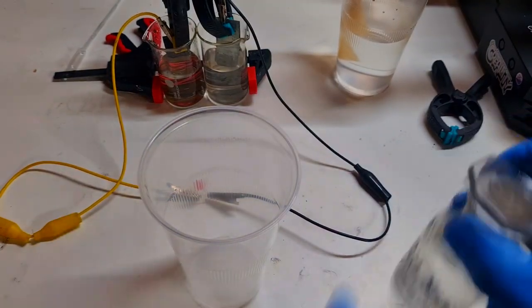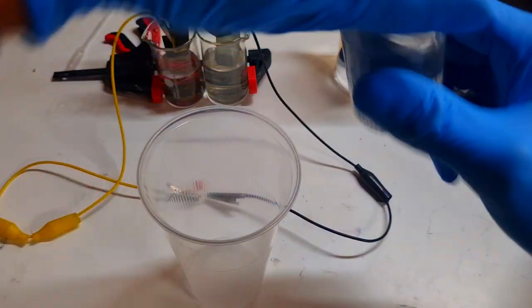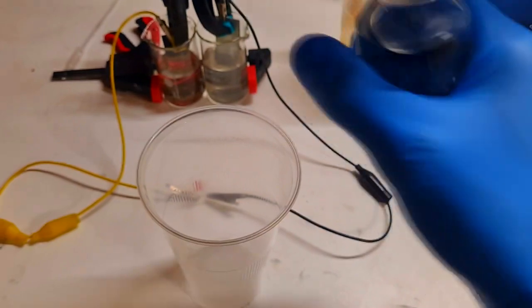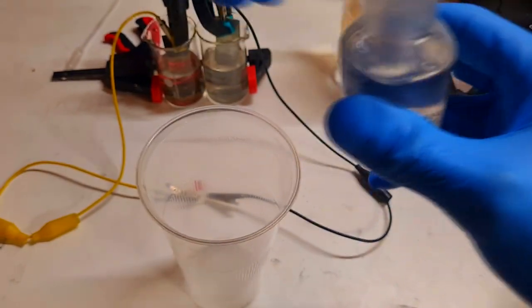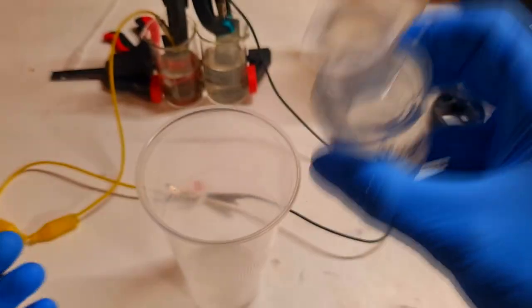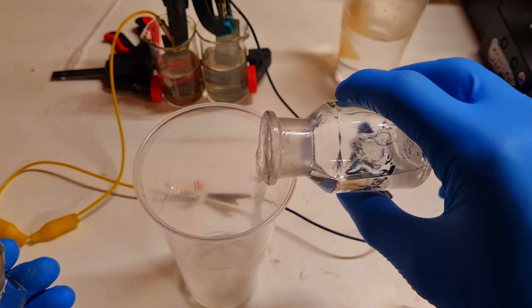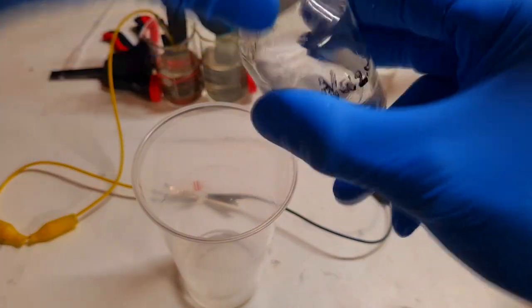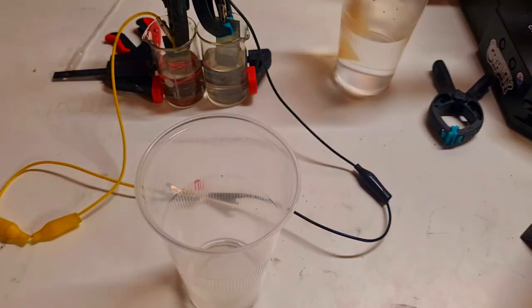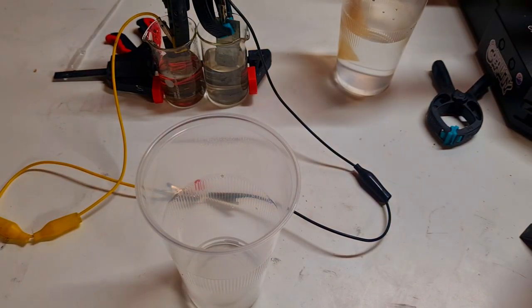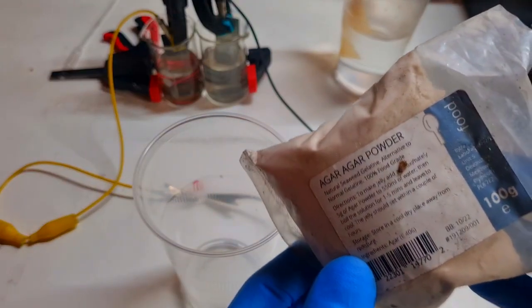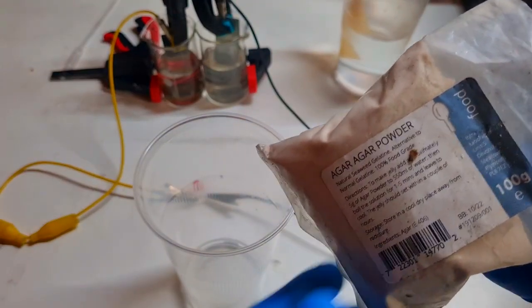Into this empty cup I will put a little bit of sodium sulfate salt. Here I have two moles of sodium sulfate. Into this sodium sulfate I will add some agar agar powder. Agar agar is the gelling agent.